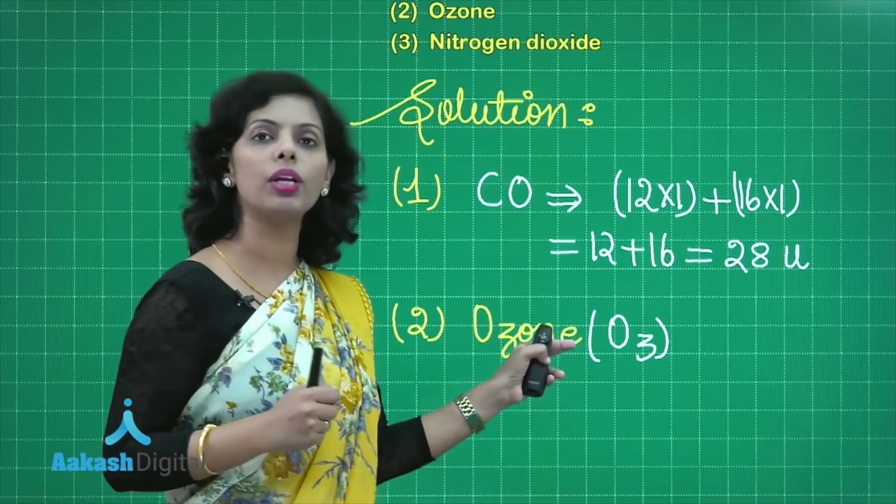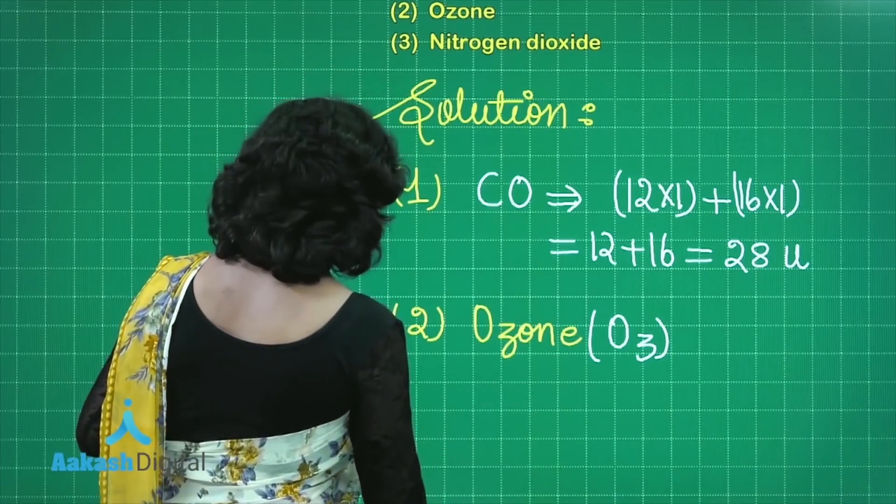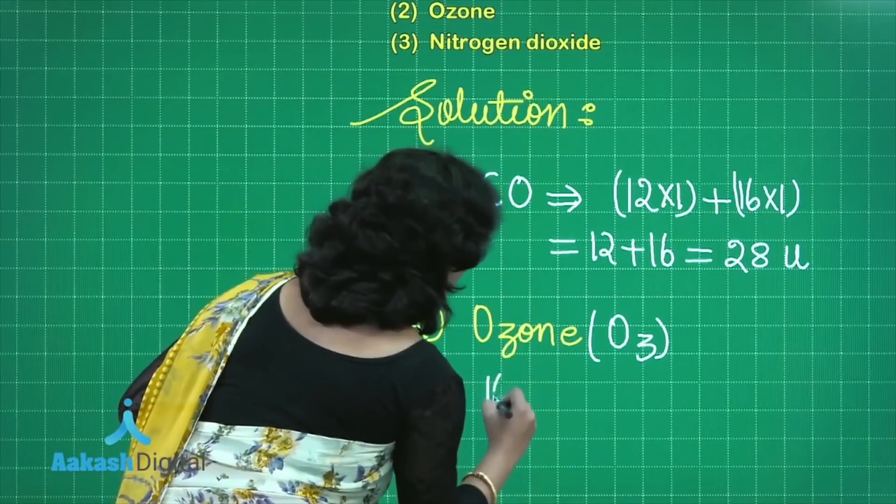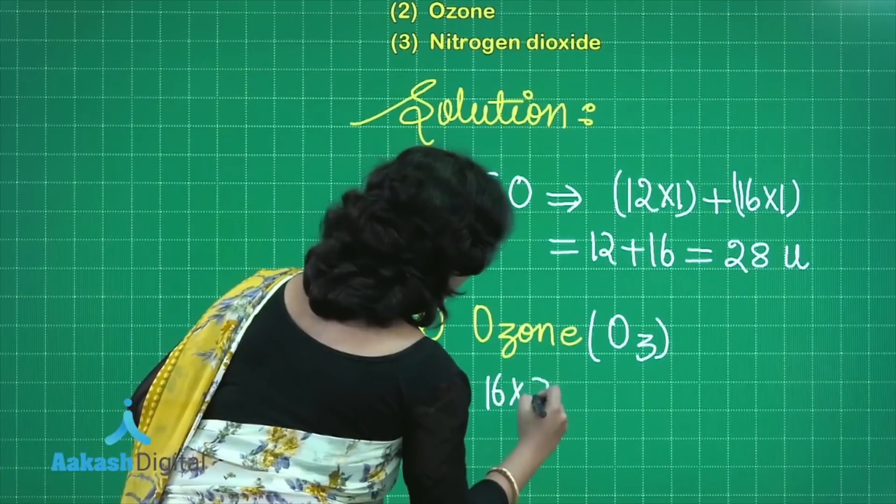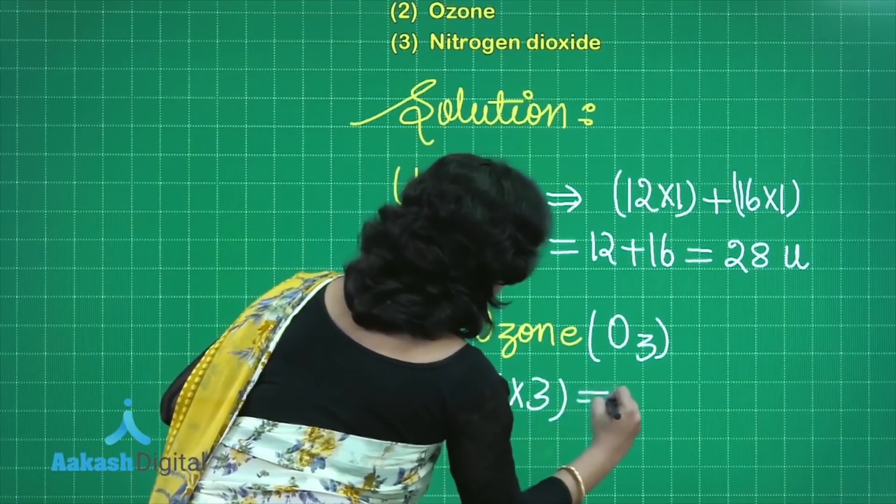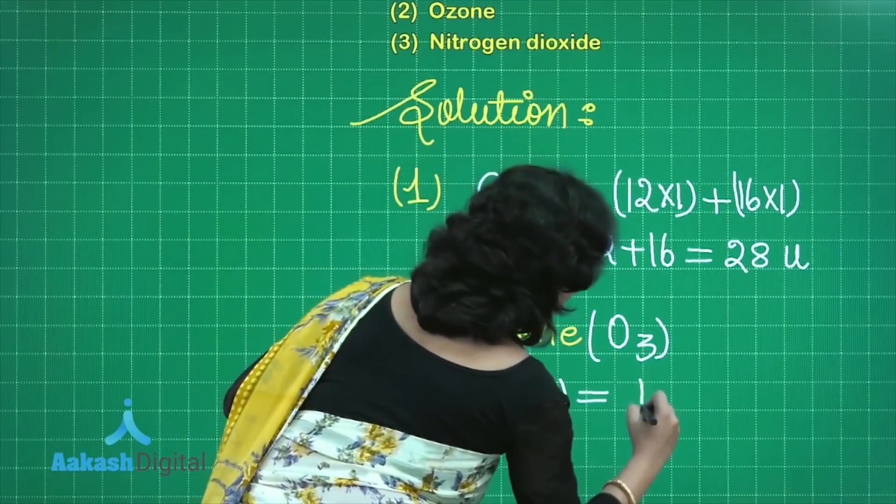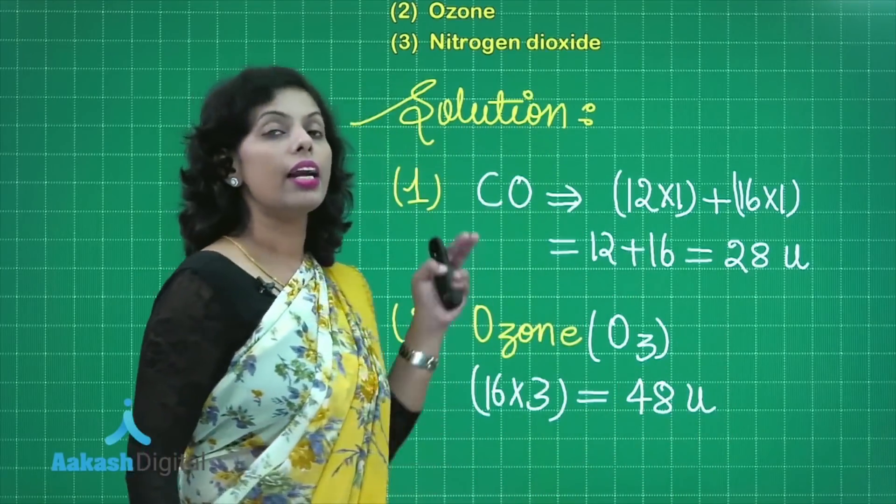Now this is O3, I've given you the formula. With the help of this we just have to calculate its molecular mass. So here the atomic mass of oxygen is 16. How many atoms of oxygen are present here? Three atoms. So I'll multiply three and this will give you the molecular mass of ozone: 16 times 3 is 48.